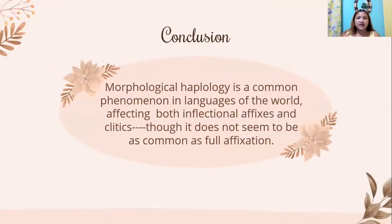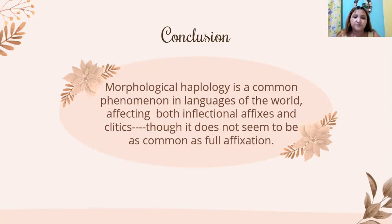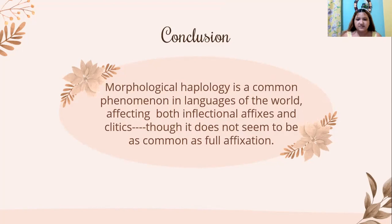In conclusion, morphological haplology is a common phenomenon in languages of the world. It affects both inflectional affixes and clitics, and it does not seem to be as common as full affixation. In English, we have different kinds of inflectional affixes: third person, possessive, plurals, progressive, past tense, and more. Affixation — adding a morpheme through prefixes or suffixes — allows us to create new words, and that's why we have to study and use the language in a proper way.